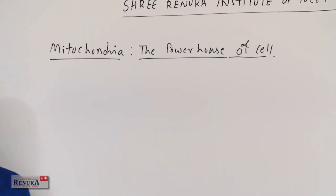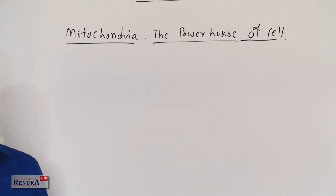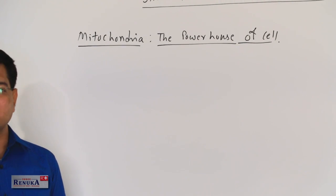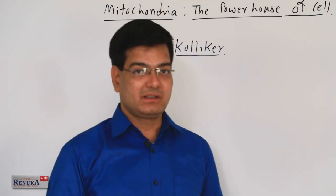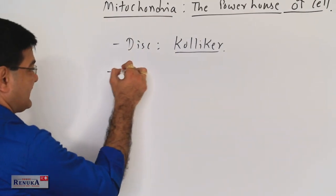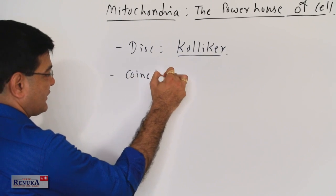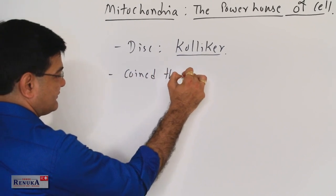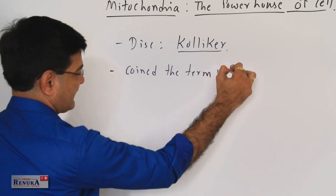Mitochondria is the powerhouse of the cell, first discovered by Kolliker. Later on, Benda was the scientist who coined the term mitochondria.